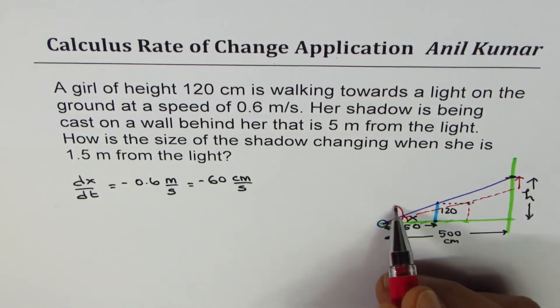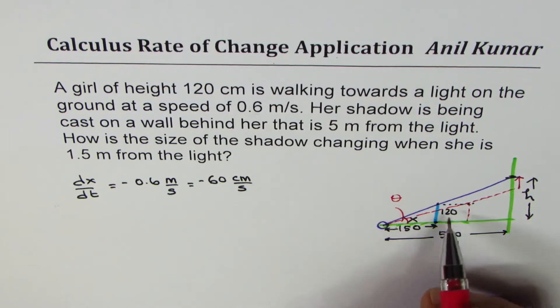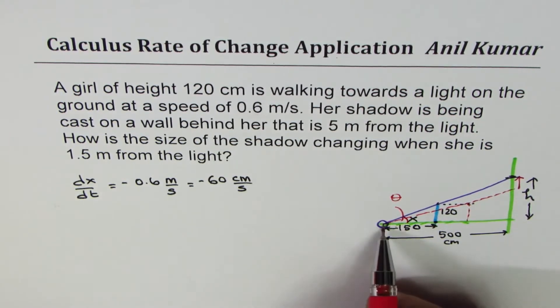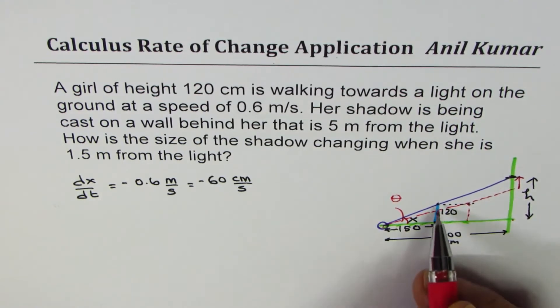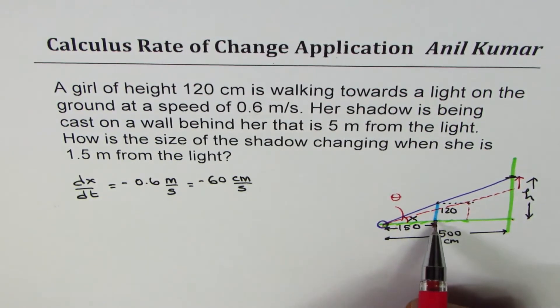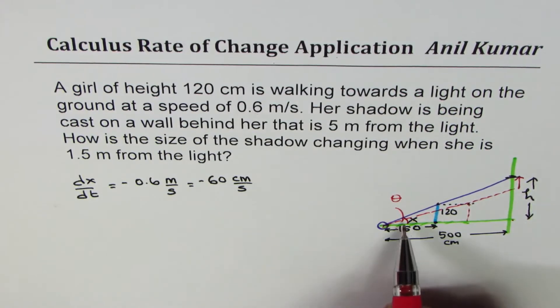So we could do it if we could work on this angle, theta. Because as the girl approaches, that angle changes. Distance to the wall remains the same. Height of the girl remains the same. Two things which are changing are x distance from source of light to the girl and the angle. That makes a huge difference.